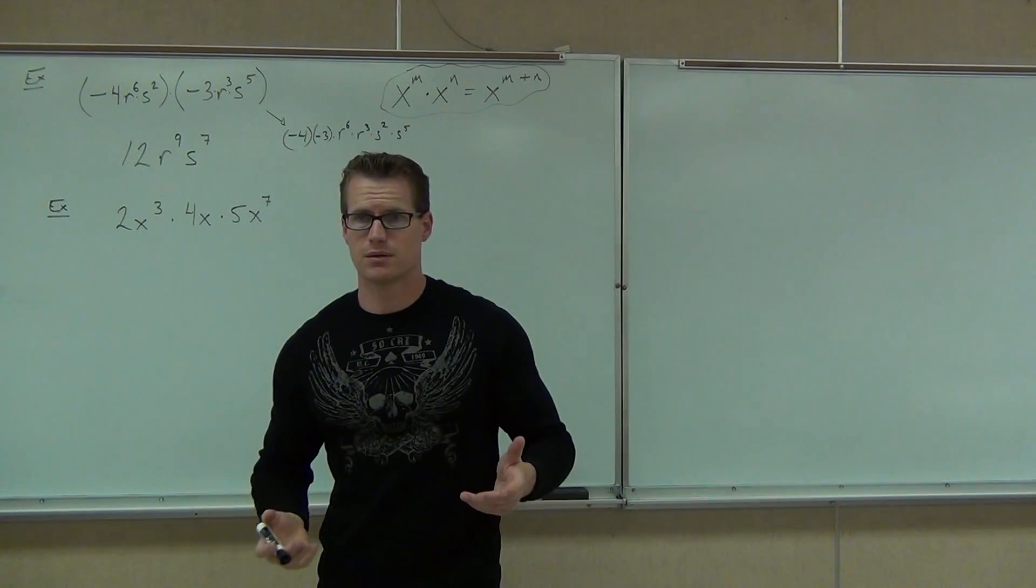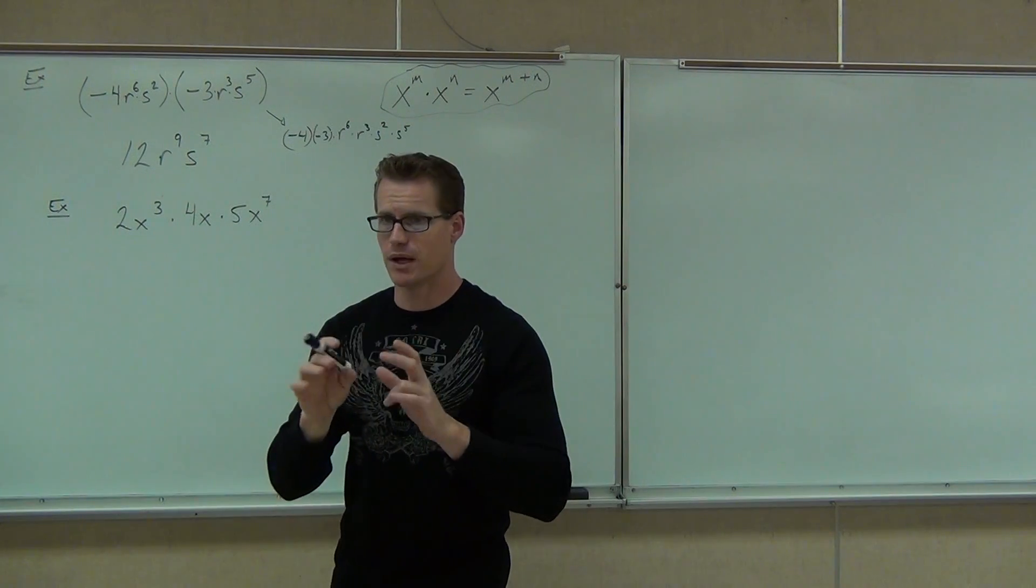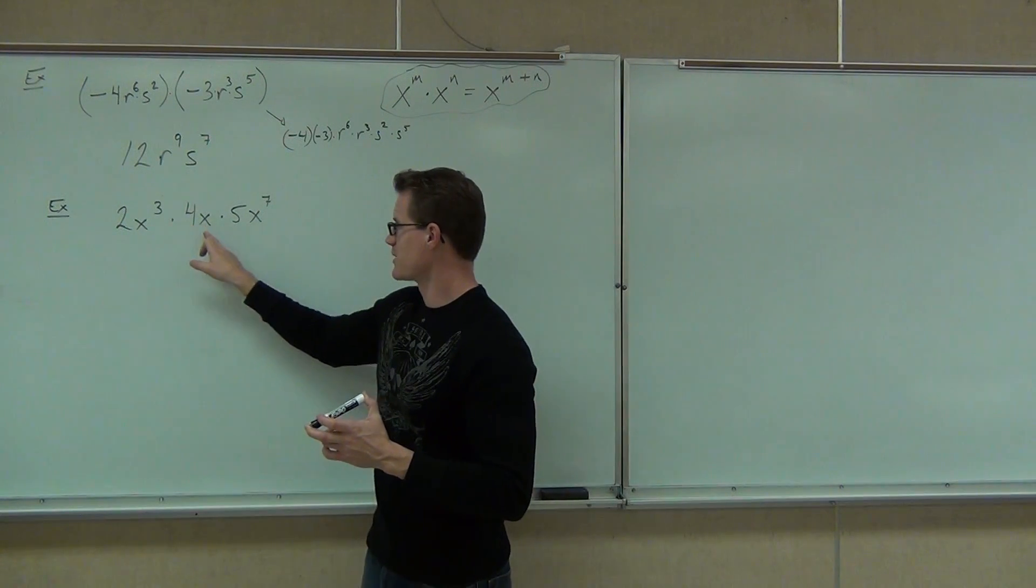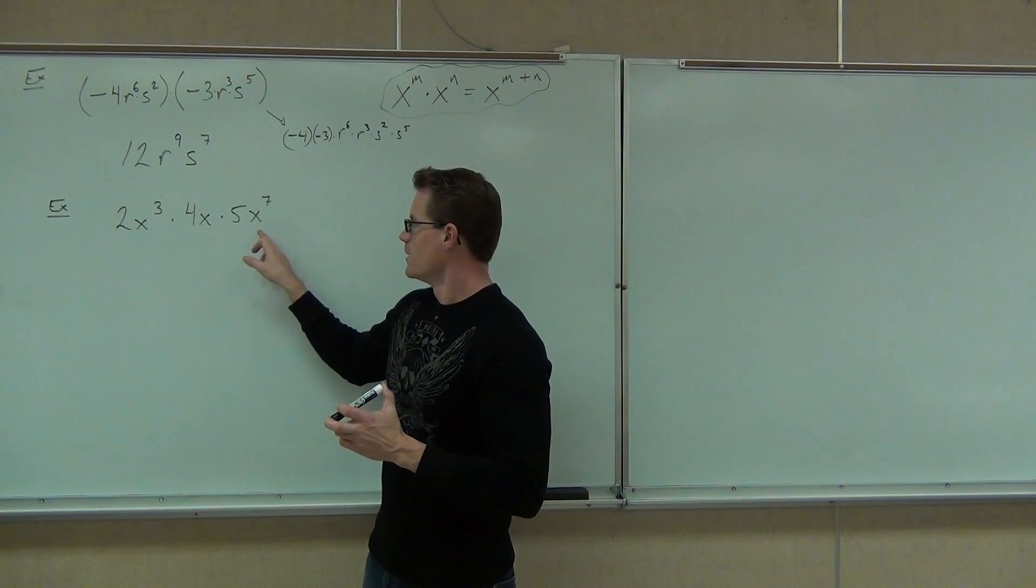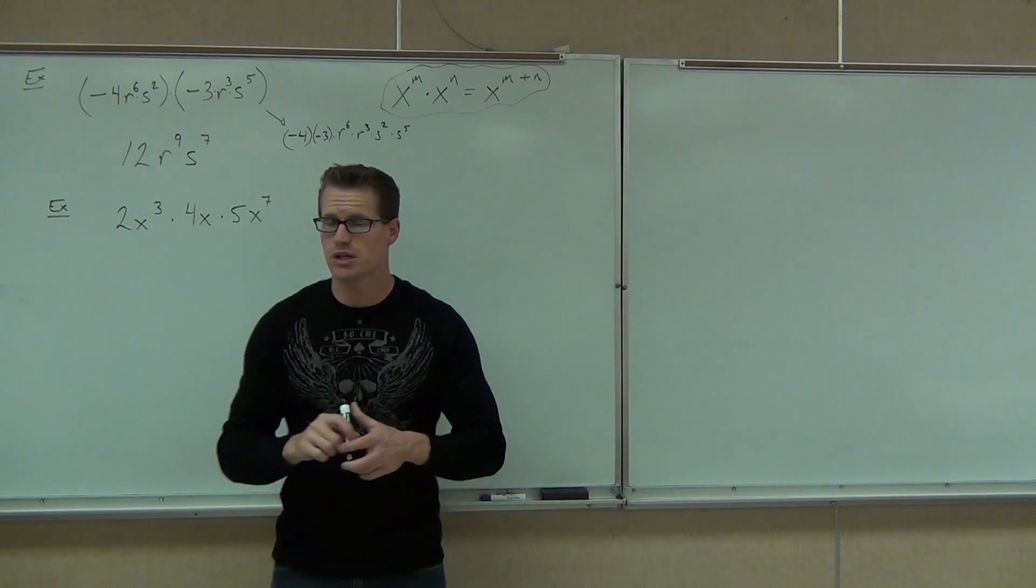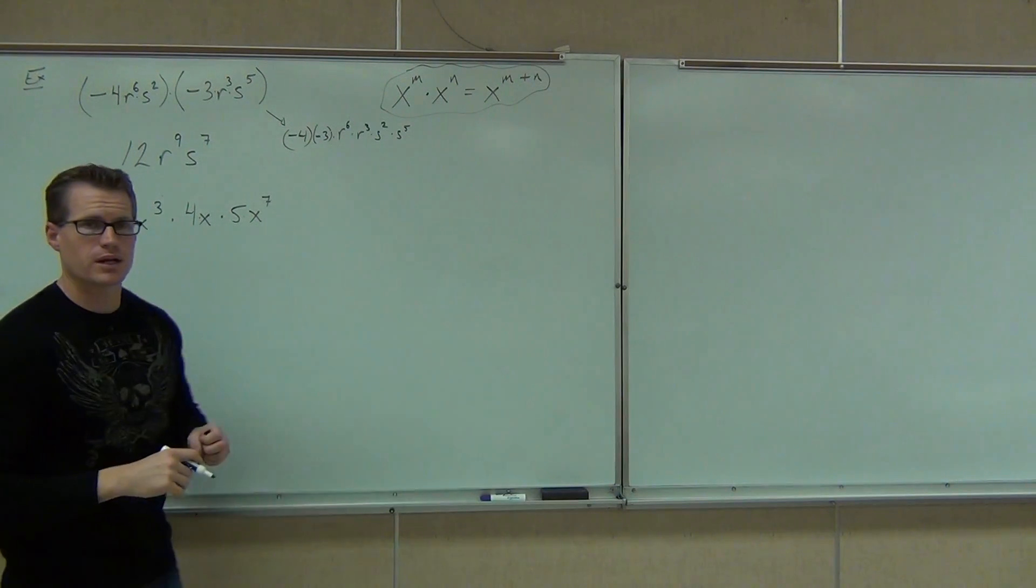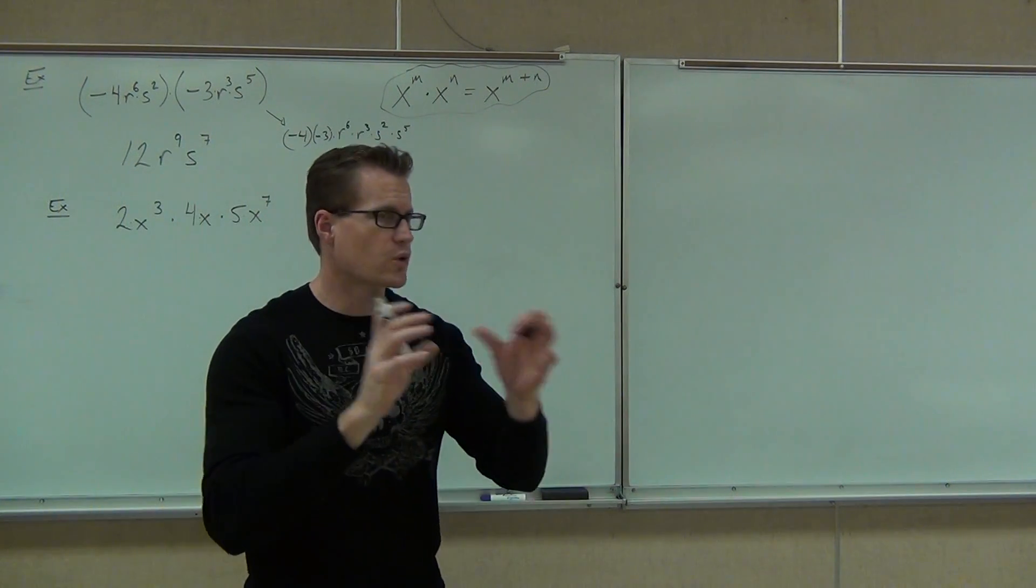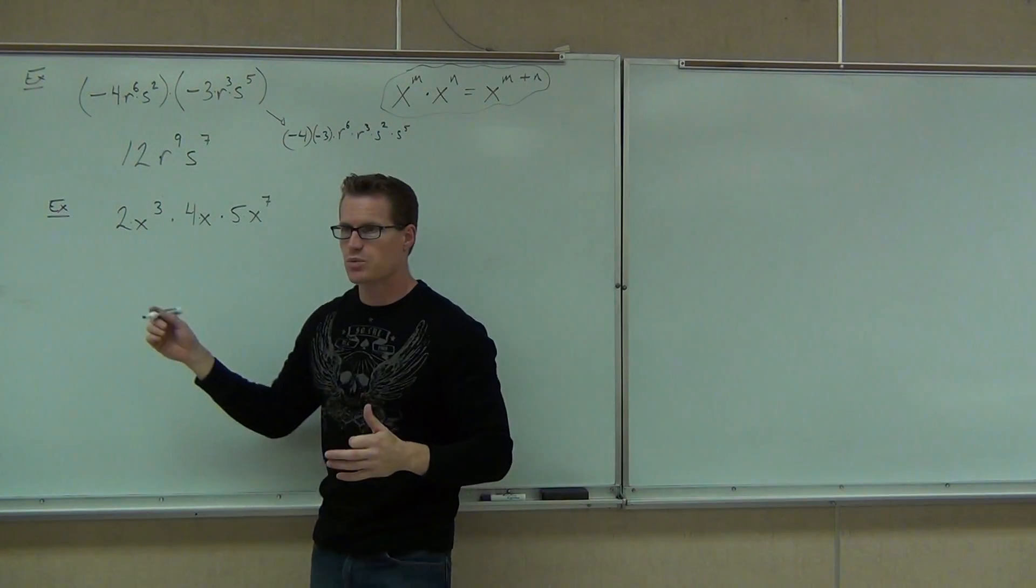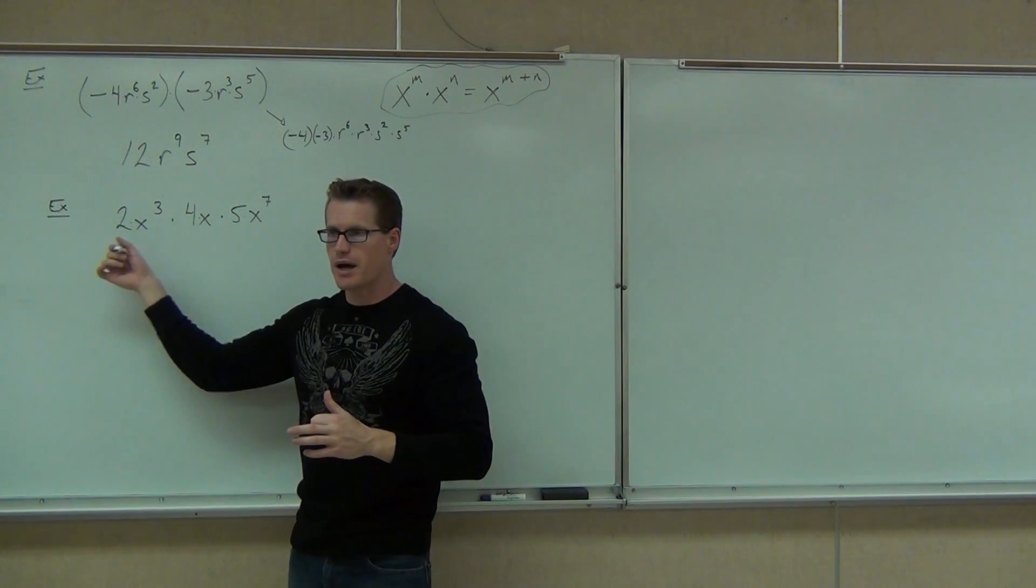Are we still multiplying? Do we have any common bases that are being multiplied? We do. We have several x's being multiplied. First, understand that when we have multiplication, this really means 4 times and 2 times and 5 times, right? That's what it really means. So you could reorder those, which means the same situation is going to occur here that happened here. Essentially, we're just going to have to multiply our numbers together and then multiply our x's together.